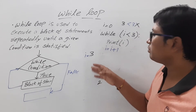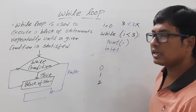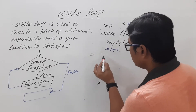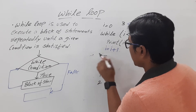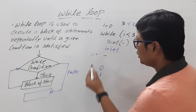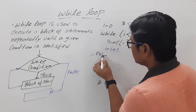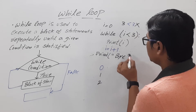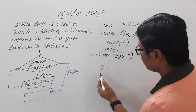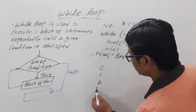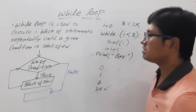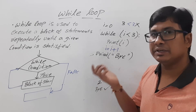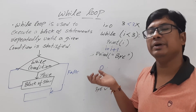If you want to verify, you can write another statement after the loop: press Enter, press Backspace so the cursor aligns with while, and write print 'bye' or 'good program' or whatever you want. After printing zero, one, two, it will print that statement.